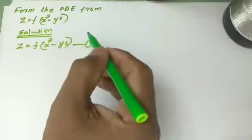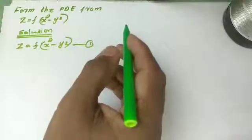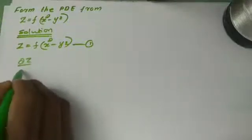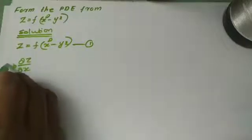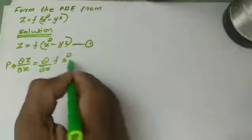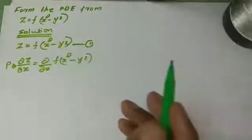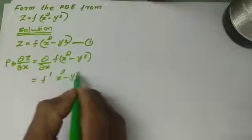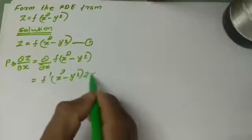Differentiating Equation 1 with respect to X: P is denoted as dou Z by dou X. So P equal to dou Z by dou X equal to dou by dou X of f of x square minus y square, which gives f dash of x square minus y square into 2X.